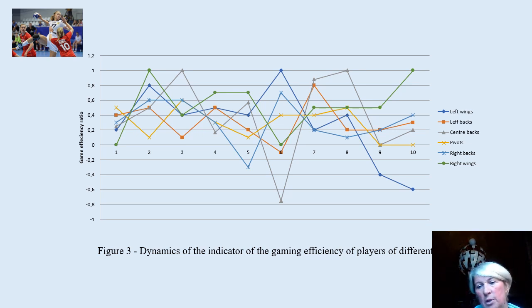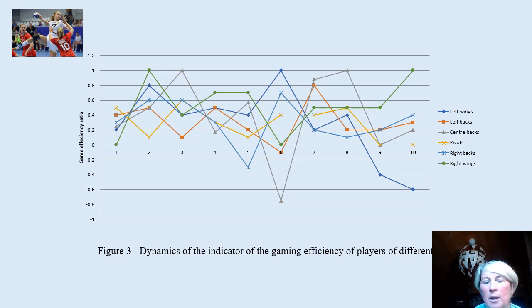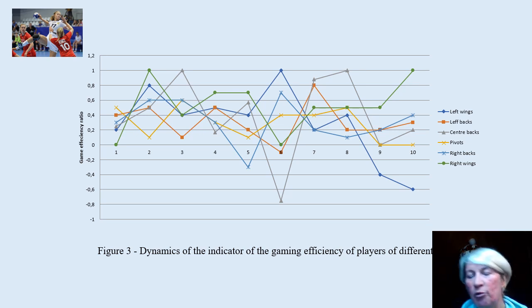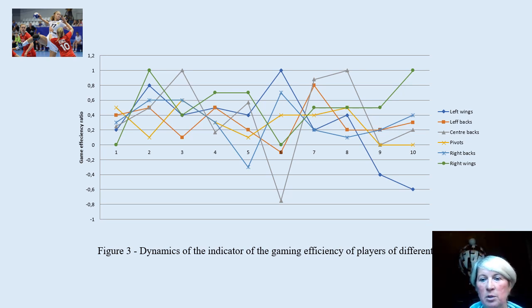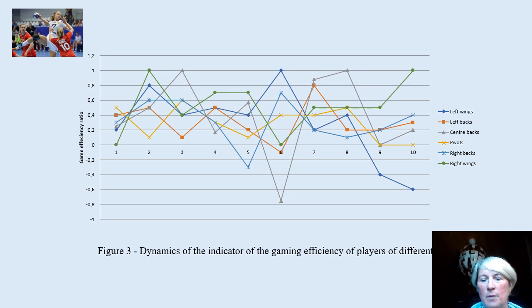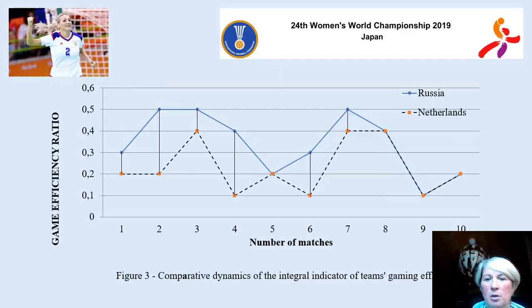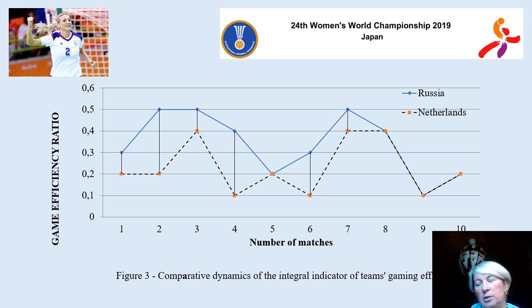The stability of players at different positions was not the same throughout the tournament. The most problematic match was match number 6 in the second phase, where center back demonstrated a minus — the number of not effective actions was more than the number of positive actions. However in this match the best performance was demonstrated by the left wings.